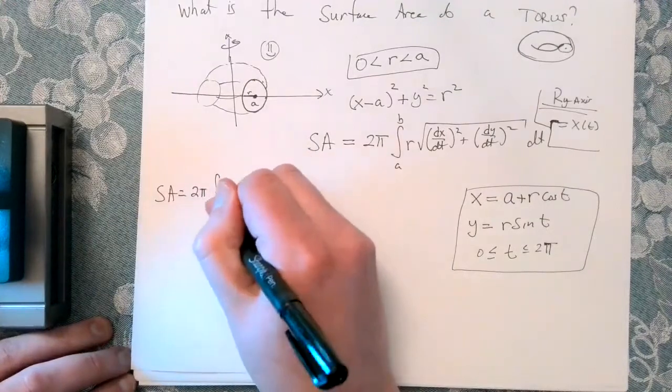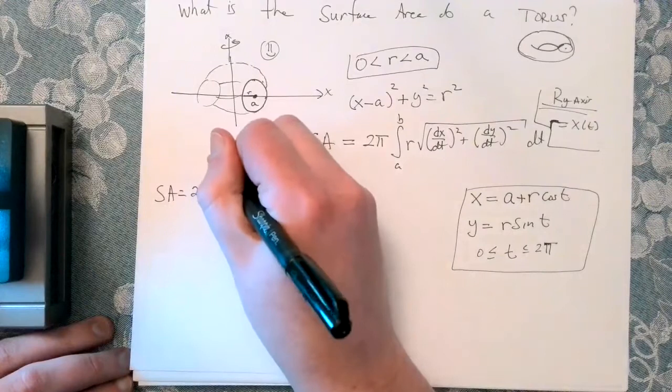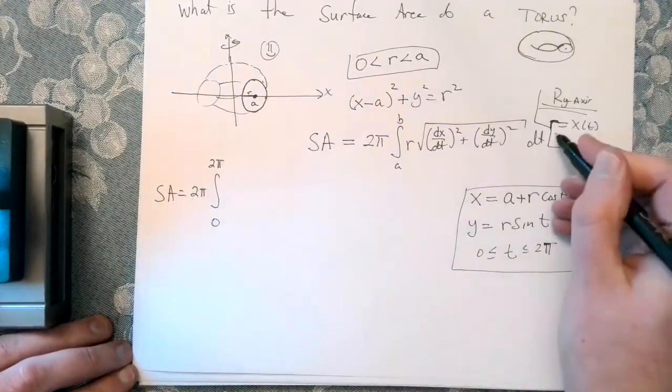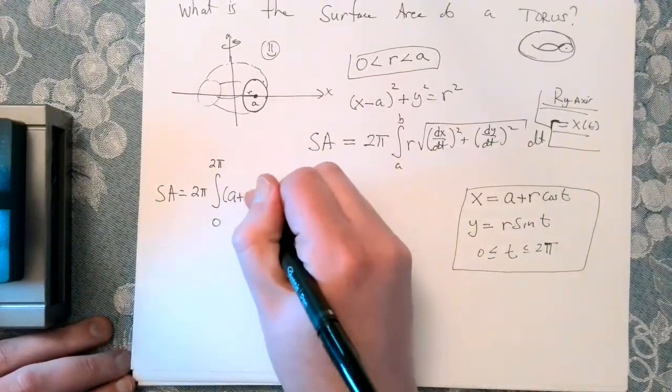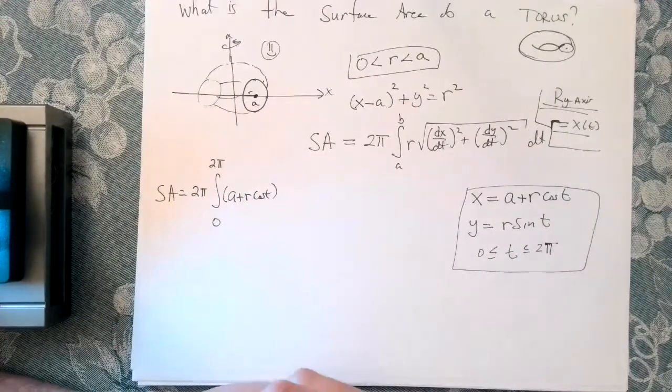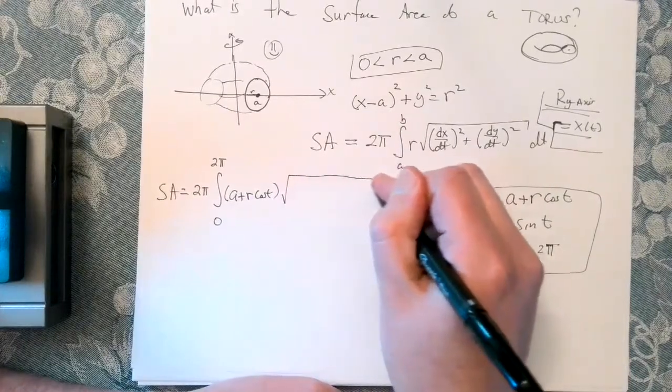So this is 2 pi. We have the integral from 0 to 2 pi. We have r, which we said was x of t. So r is x of t because we're spinning around y. So that'll be a plus r cosine of t. And it looks like we just need some derivatives.